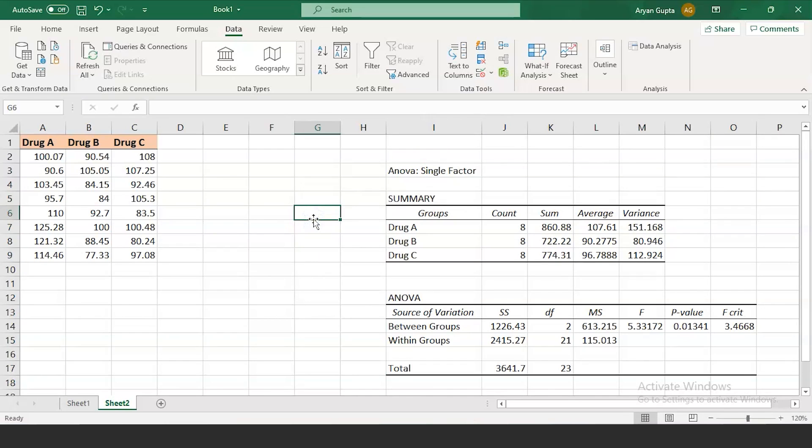So you can see we have our analysis of variance table with the summary. Let's understand each term one by one. The average time taken to cure the disease after consumption of three drugs are 107, 90 and 96 hours approximately. The difference between the largest and the smallest mean is 17.47. Here, one significant observation is that the F value is greater than F critical value. So this means we can reject the null hypothesis.